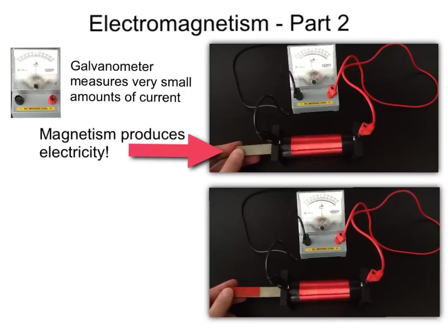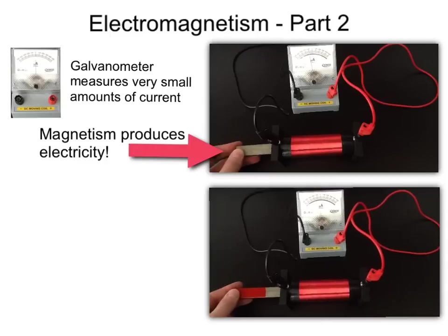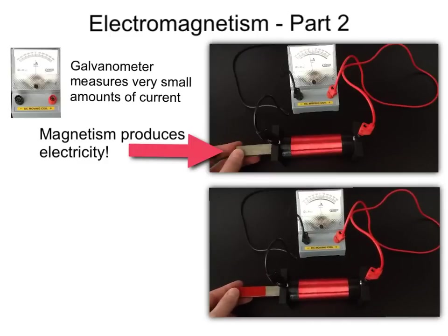When we had the red end in first, it went the other way. Here with silver end in, the current flows the other way. With the silver end in and out, the current flows the opposite direction.